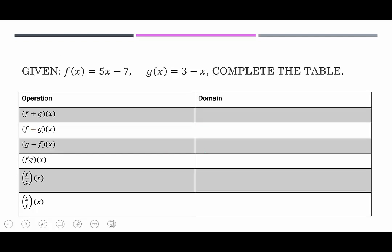Now we want to complete the table: we'll do the operation, get our functions, then state the domain for each. Since there are no restrictions on the domains for f or g, the sum, difference, and product functions should have no restrictions either. The sum function is (5x − 7) + (3 − x), which simplifies by combining like terms: 5x − x = 4x, and −7 + 3 = −4, giving us 4x − 4. It's also linear, so no restrictions.